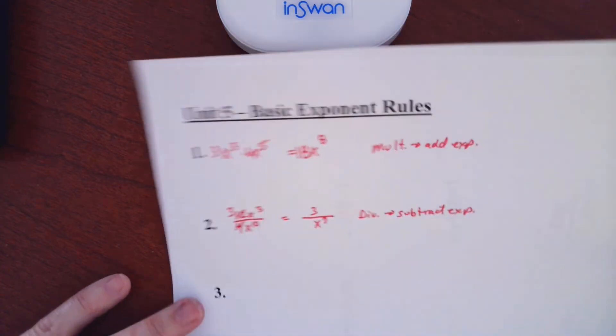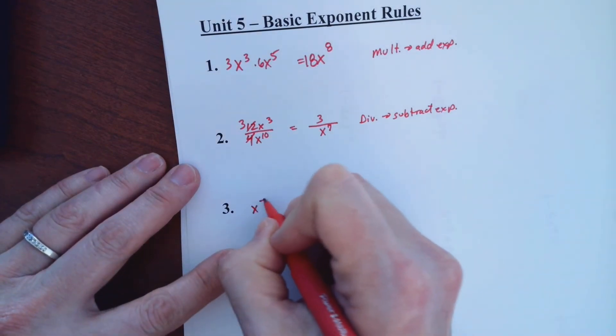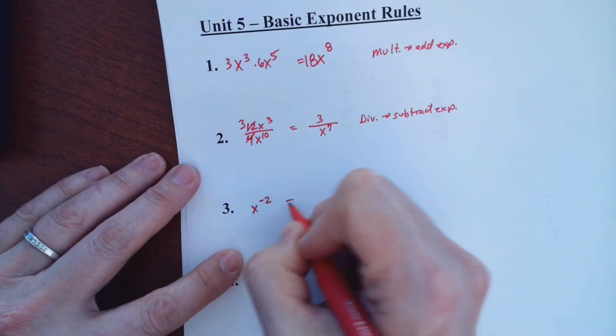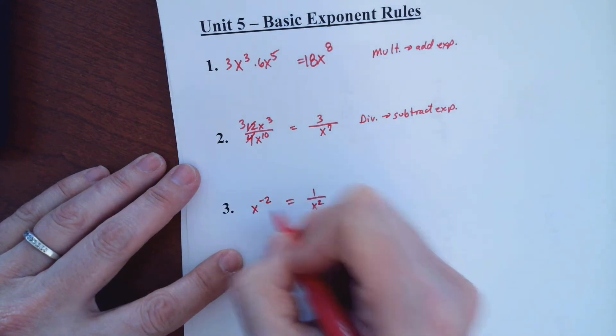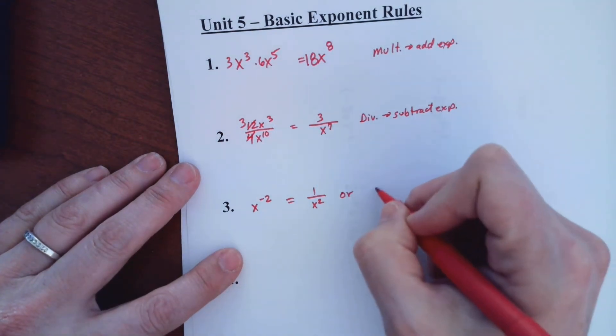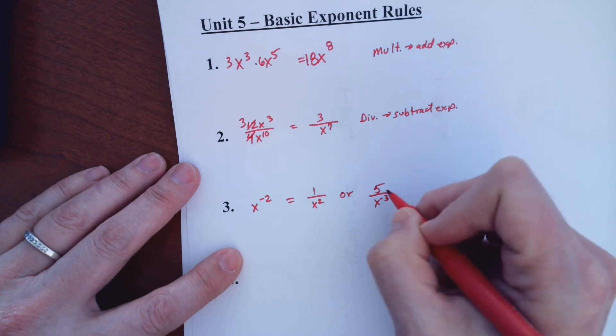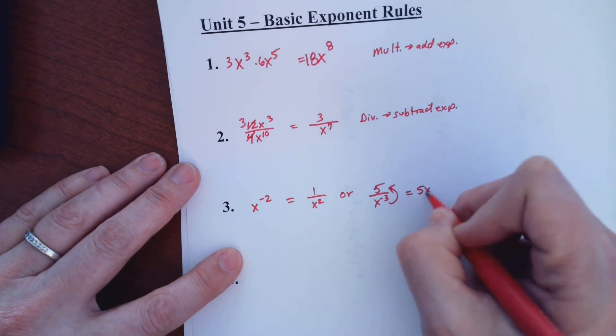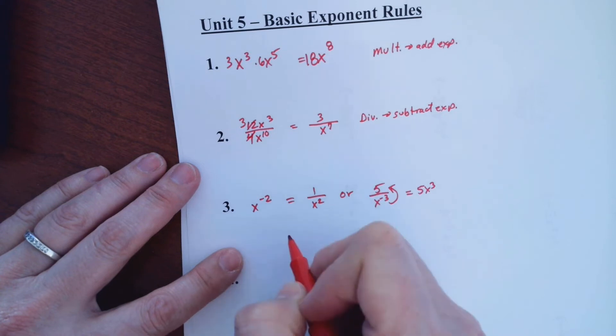The third rule is kind of dealt with up here. When you have a negative exponent, like x to the negative 2, what that means is 1 over x squared. It means that it's going to move to the denominator. If something's already on the denominator, like let's say you had 5 over x to the negative 3, that means it needs to move up. Basically wherever it is, it's not happy there. So this would move up and become 5x to the third. Negative on the bottom, it moves up. Negative on the top, moves down.